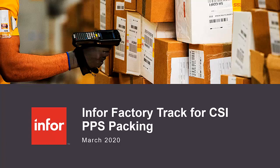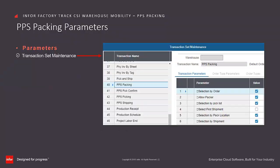FactoryTrack for CSI PPS Packing. FactoryTrack has several PPS Packing parameters to control the validations, displayed fields, and processing options that are permitted as part of the PPS Packing process. These are defined on the transaction set parameters form for the PPS Packing transaction.